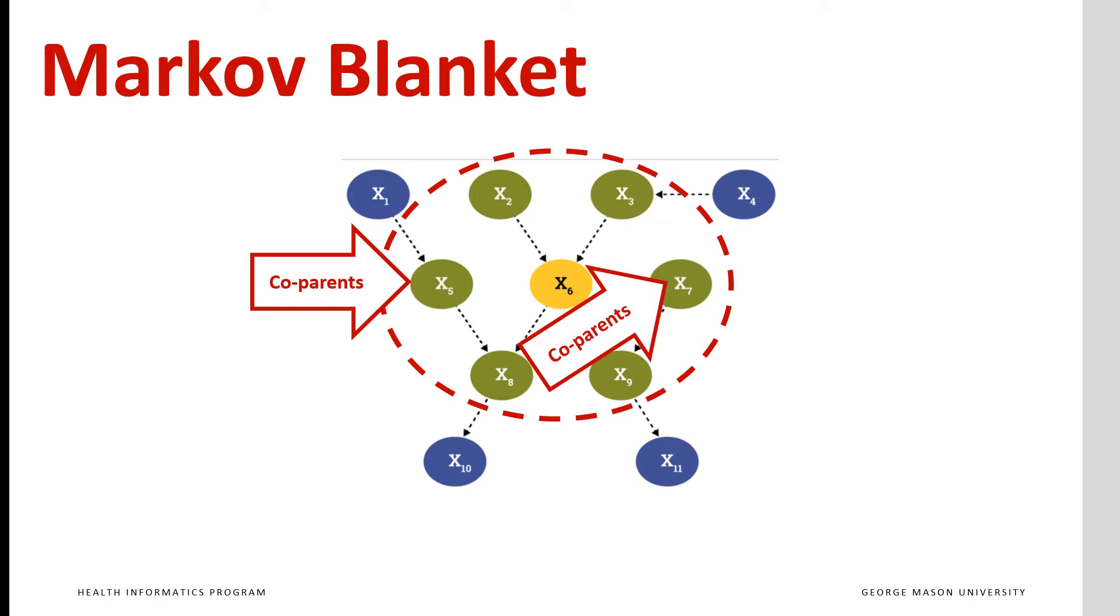Finally, Markov blanket includes co-parents. These are other parents of children of x6. In this network, these are x5 and x7.